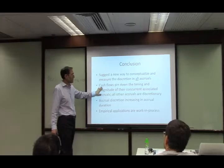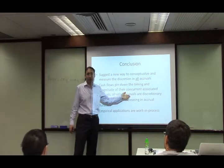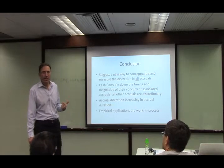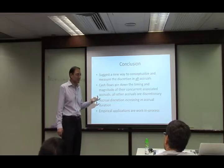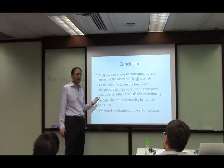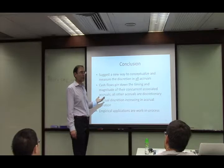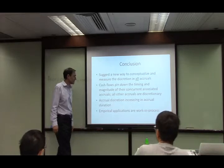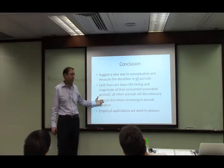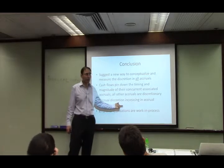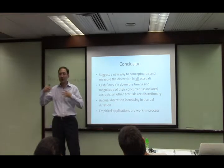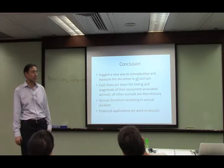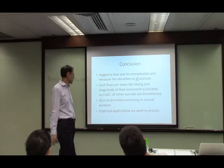The main idea was that the cash flows pin down the timing and the concurrent associated accruals — so these are non-discretionary. There's a very natural way to go; we don't have to do crazy things. There's a lot more natural way to go about it than the Jones model. And for the discretionary accruals, further characterization on accrual duration — which is basically the horizon of estimates — is a helpful way to organize thinking about discretion.